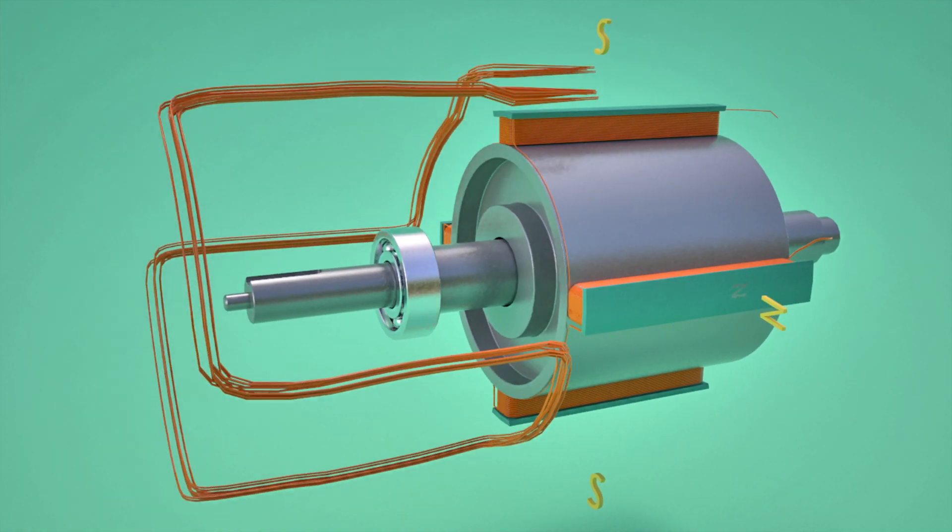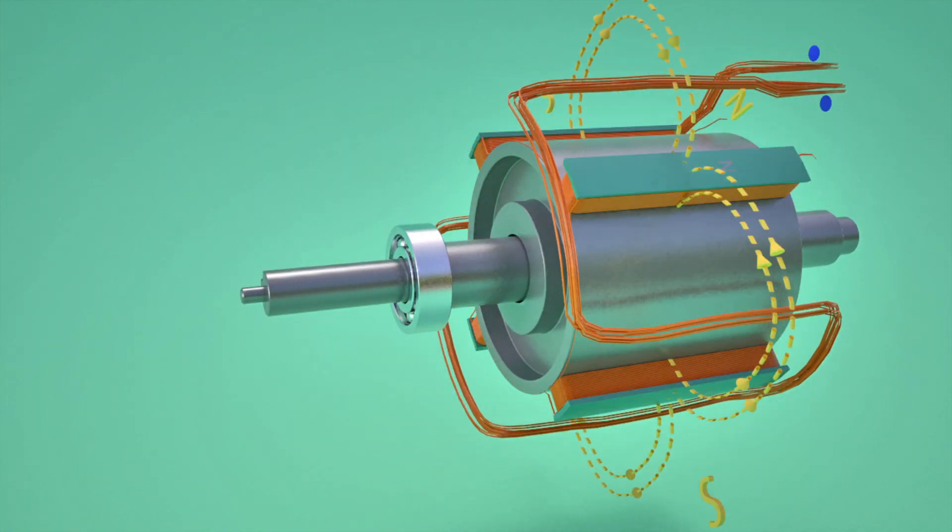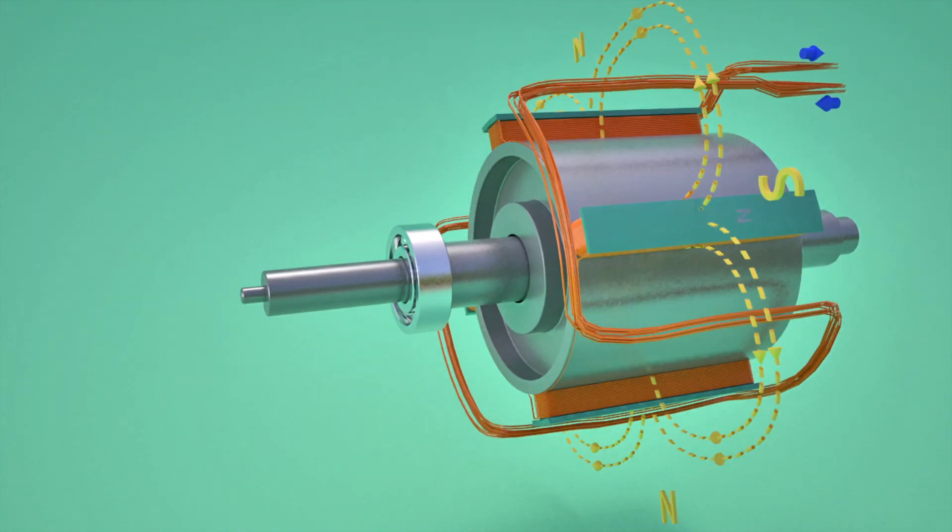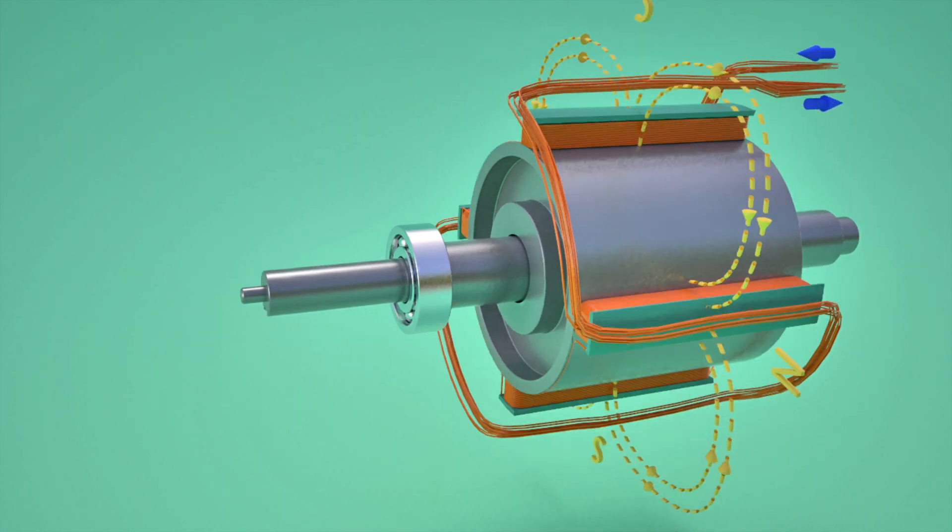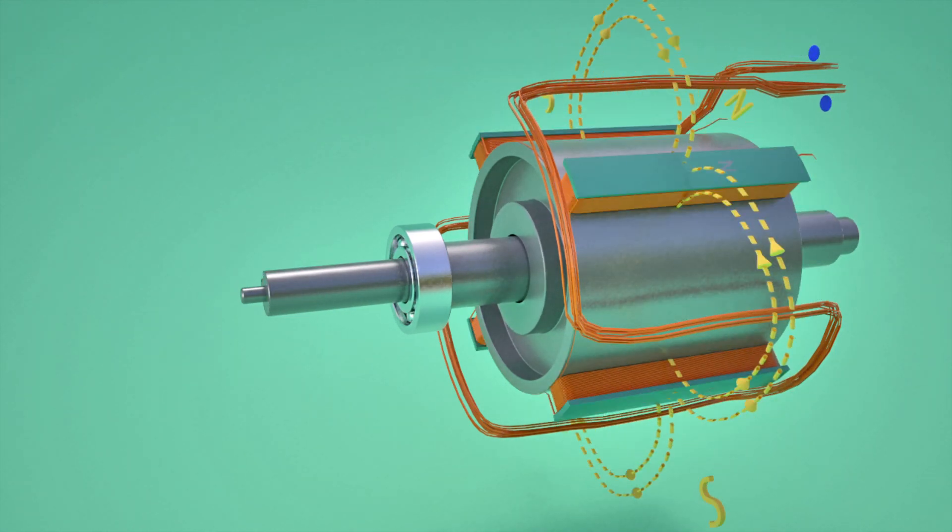Such revolving magnetic flux intersects the armature coils, which are fitted around the rotor. This generates an alternating electromagnetic force across the winding.